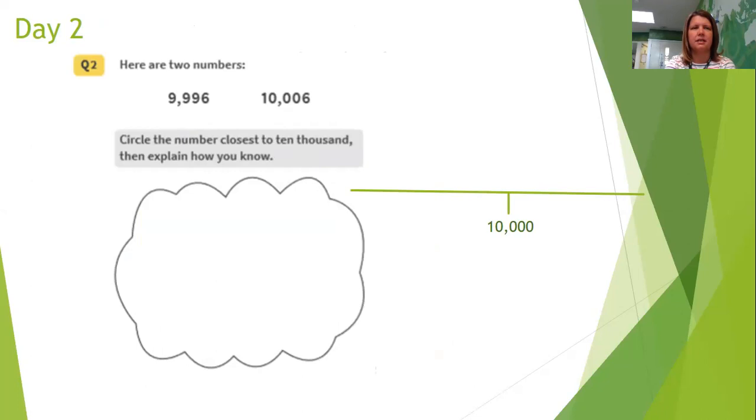There's my 10,000 and I'm going to mark on there 9,996. Now, because I know that the number before 10,000 is 9,999, I know that the difference there is four. And you probably don't need to draw this because you can work it out. The difference between 10,000 and 10,006 is six. So I'm going to circle my answer.